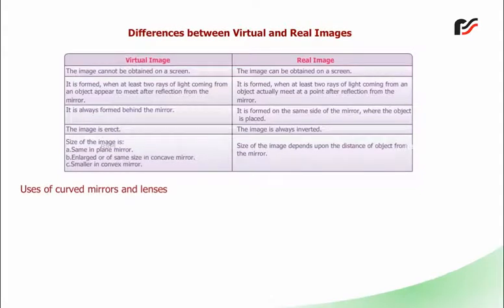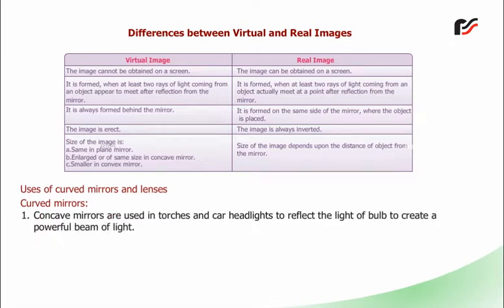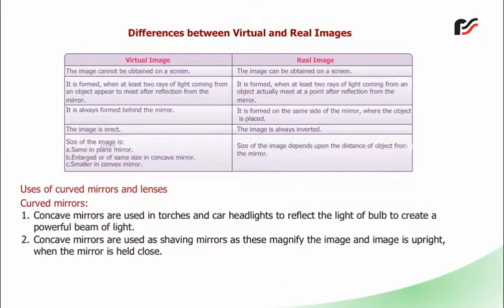Uses of curved mirrors and lenses: Curved mirrors: Concave mirrors are used in torches and car headlights to reflect the light of the bulb to create a powerful beam of light. Concave mirrors are used as shaving mirrors as these magnify the image and the image is upright when the mirror is held close. Convex mirrors are used as rear-view mirrors in automobiles as the images are erect and the field of view is wide.